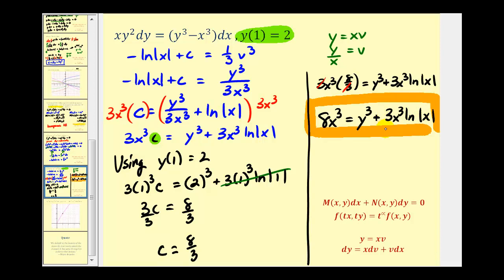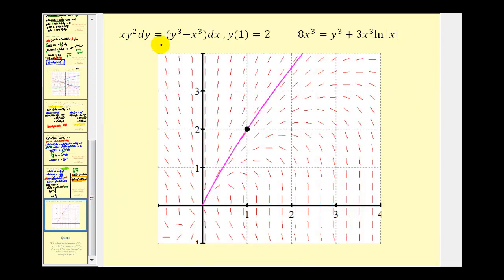Let's finish by looking at this graphically. We can use the original differential equation to generate the slope field shown. Y(1) equals two represents the point with coordinates (1, 2). Notice that if we graph our solution, it fits nicely in the slope field and passes through that point, which is our initial condition — verifying that our solution is correct.